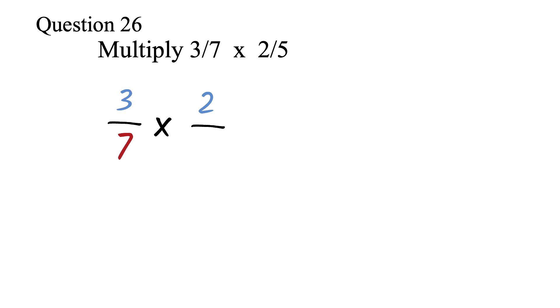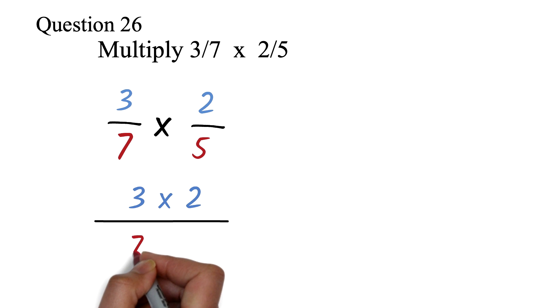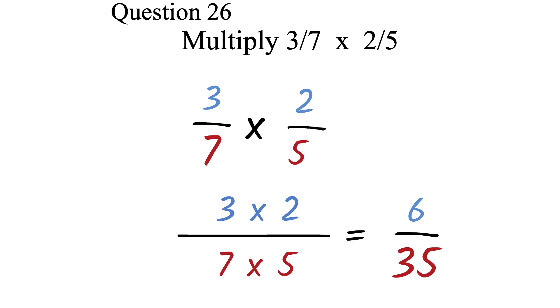Question 26. Multiply the fractions 3 over 7 and 2 over 5. Multiplication is the simplest operation in fractions. All you have to do is multiply the numerators together and then multiply the denominators. Here, we will multiply 3 times 2 and then multiply 7 times 5. This will give us 6 over 35 as our answer. The only difficulty here is your ability to multiply. Let's take our final question in this video.